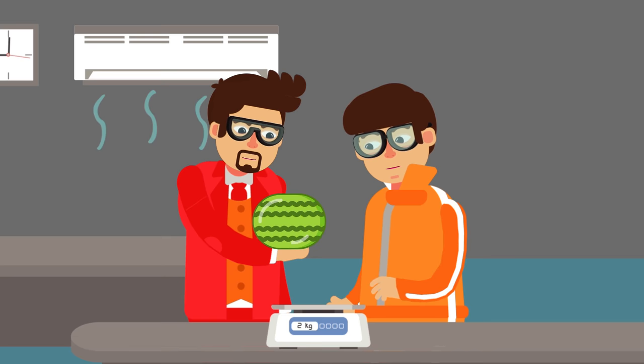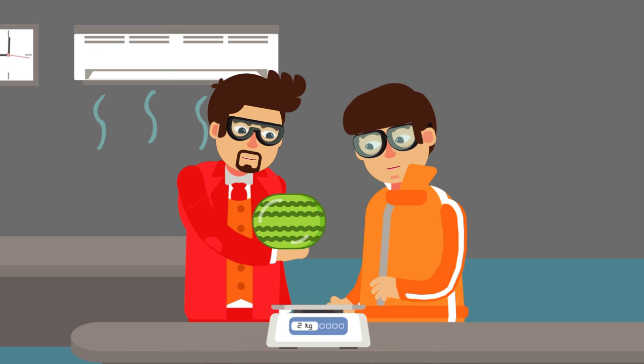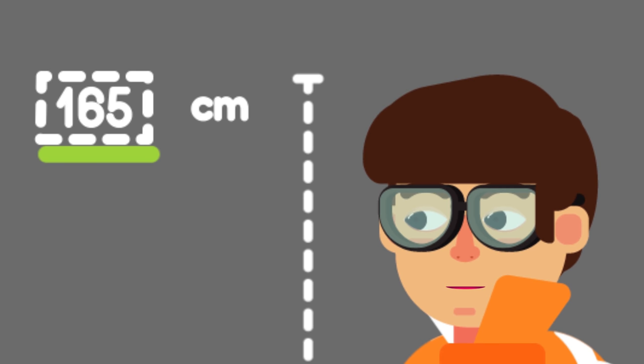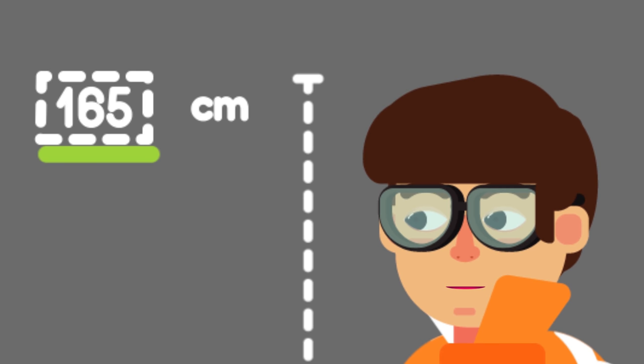If a quantity possesses these two properties, then it is a physical quantity: its numerical magnitude and the unit in which it is measured. If we say that the height of a student is 165 cm, then it is representing both properties of a physical quantity. 165 is the numerical magnitude, while cm is the unit in which the height is measured.